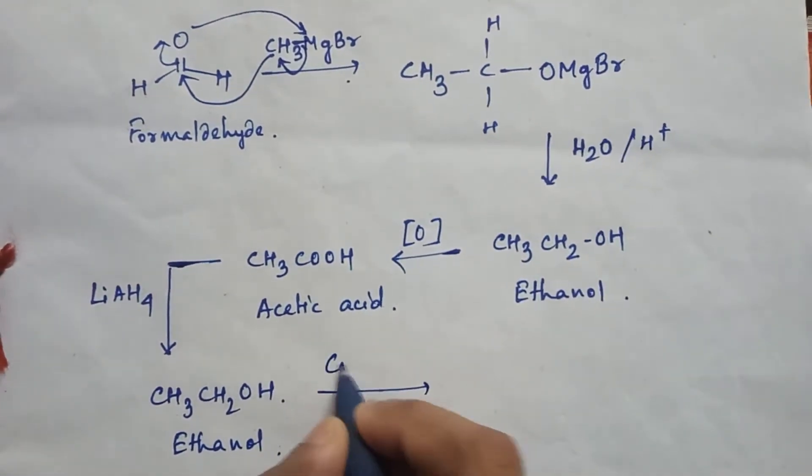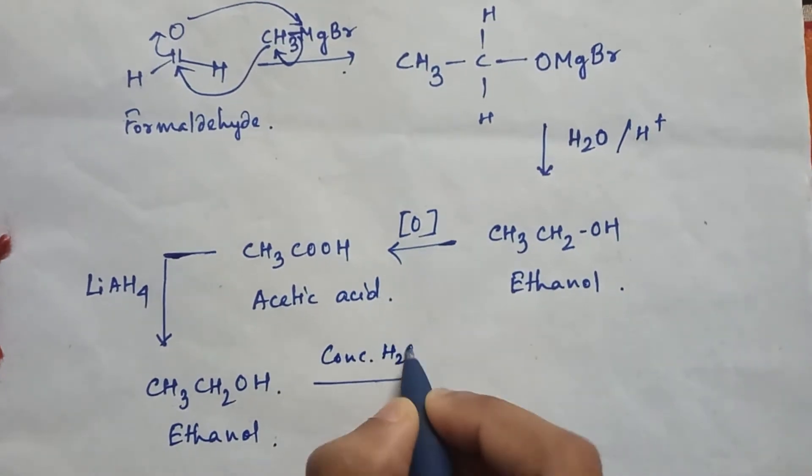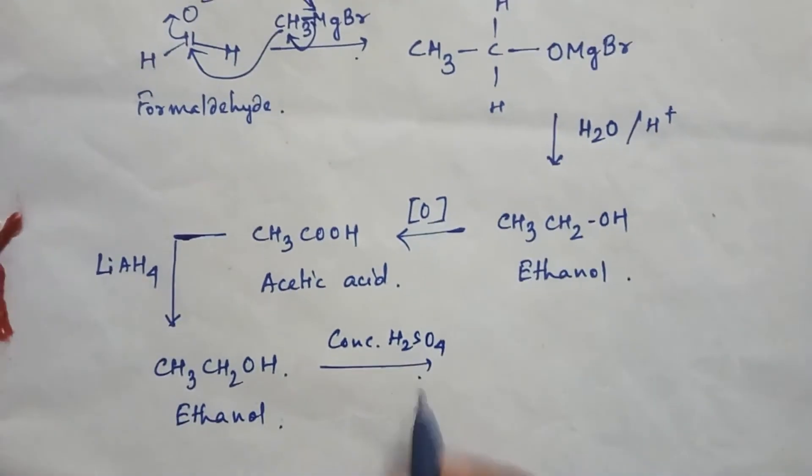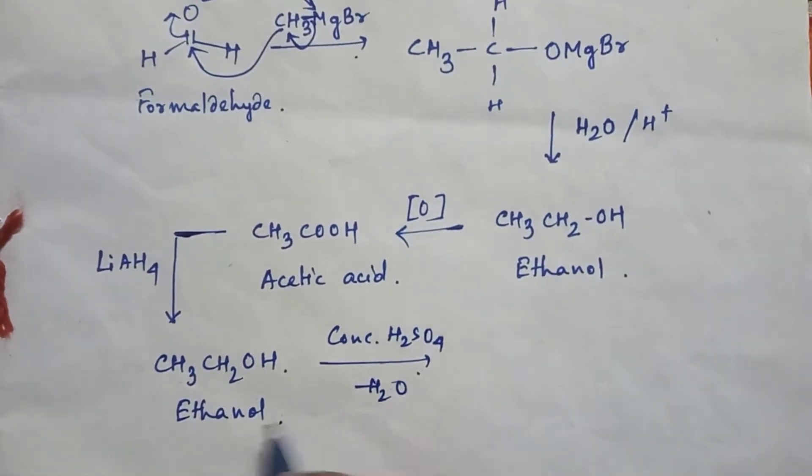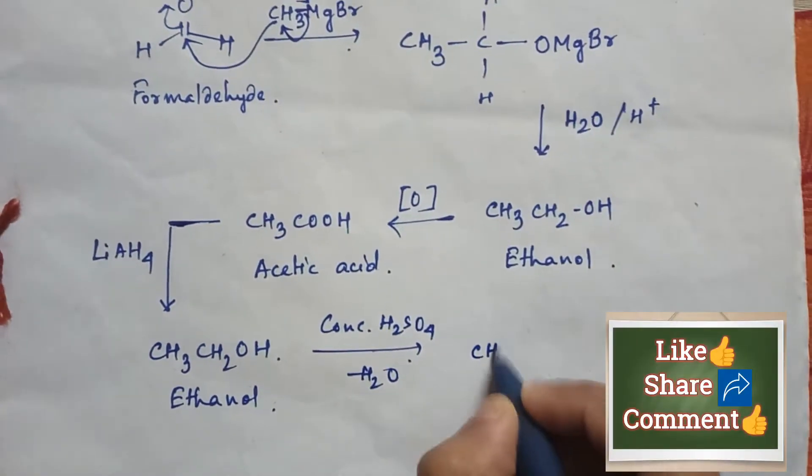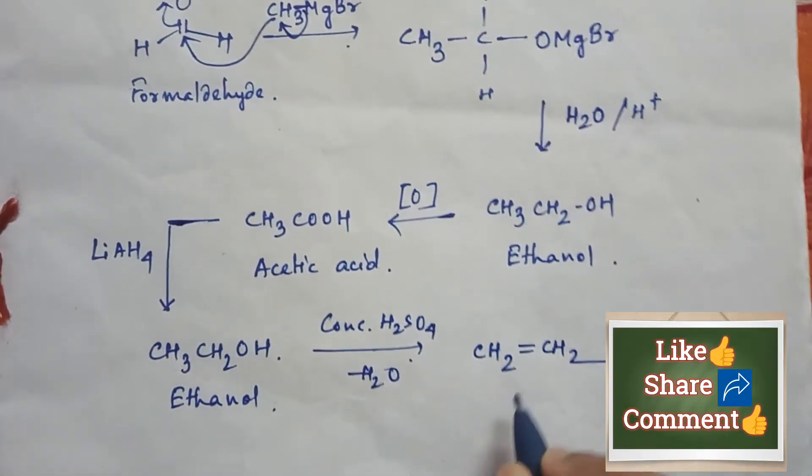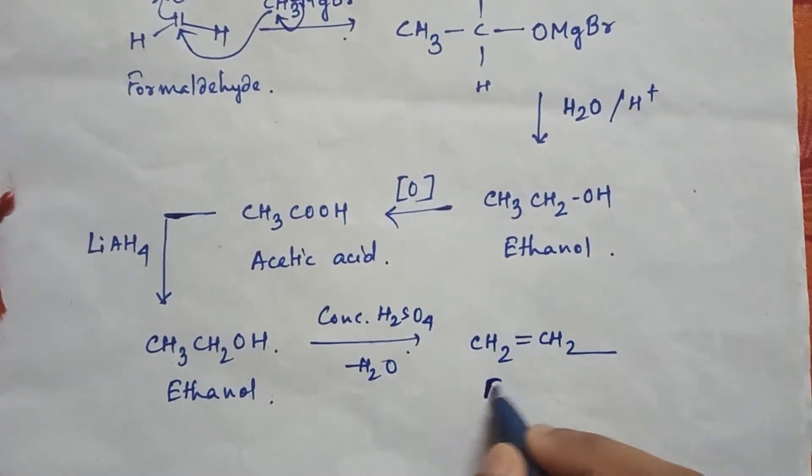Now if you add here concentrated H2SO4, then water will be removed from this ethanol and you will get alkene CH2=CH2. This is ethanol and here the alkene is ethene.